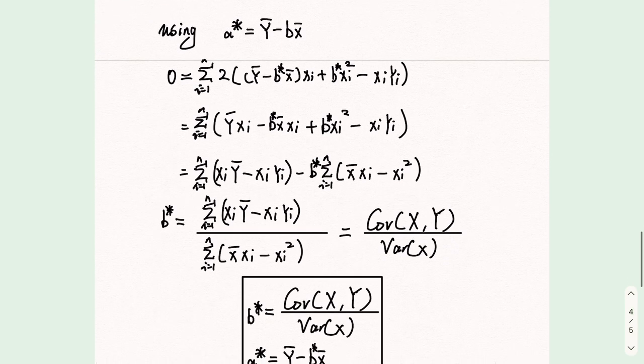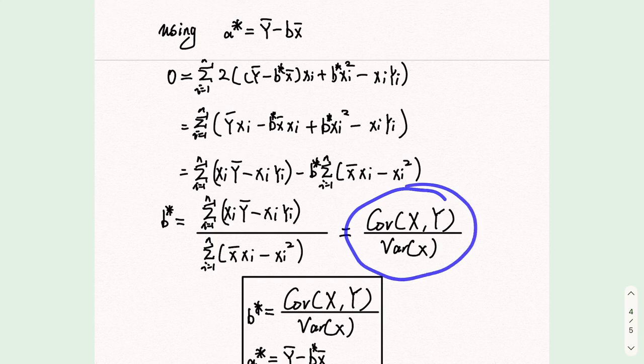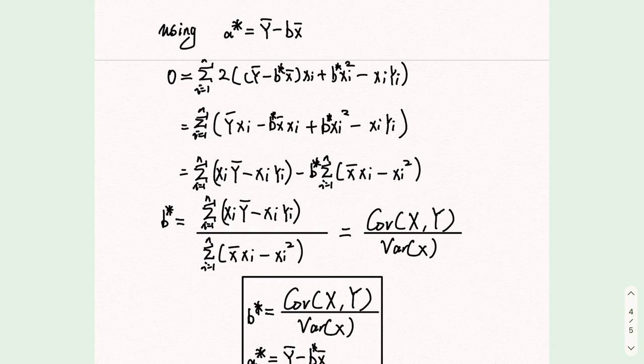After simplification, we got b star is equal to the covariance of x, y, over the variance of x. And a star is equal to y bar minus b star x bar.